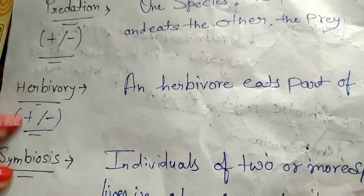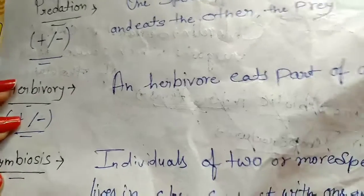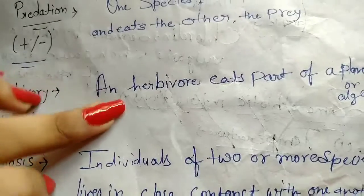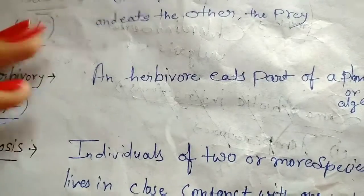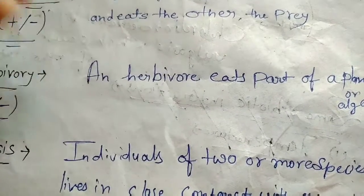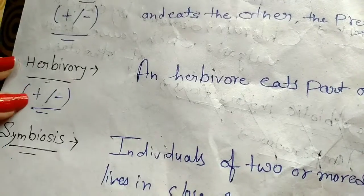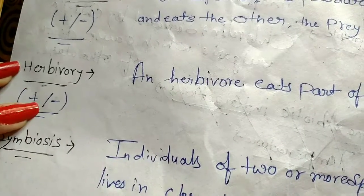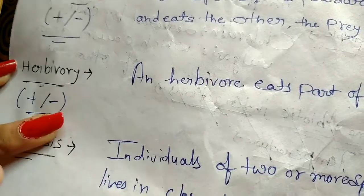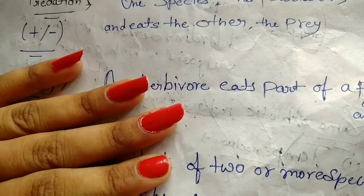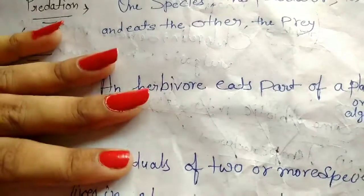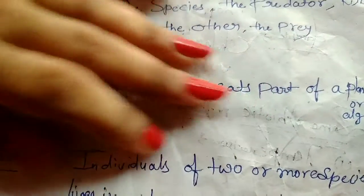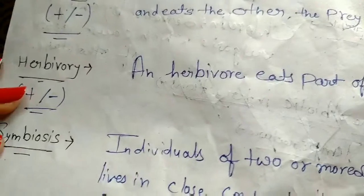Next, we are discussing herbivores. Herbivory involves eating part of a plant or algae. If an organism eats any plant or algae, then it is included in herbivory.